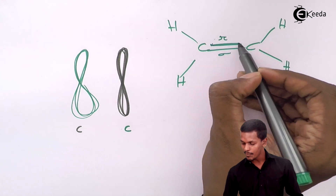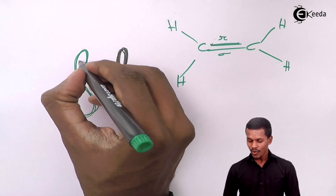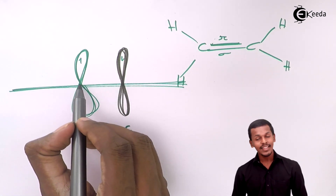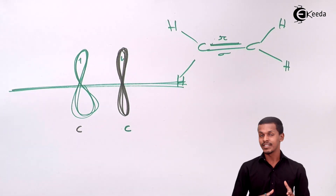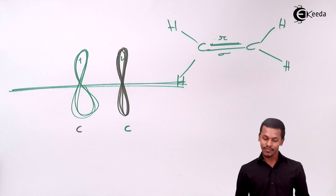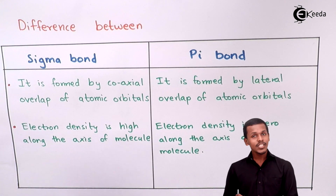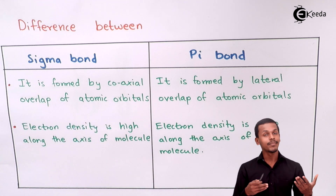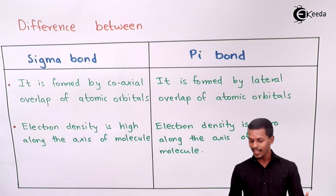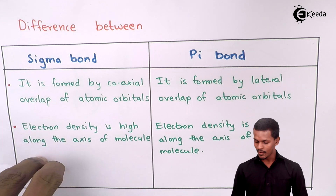Electrons of opposite spins are required. If I pass the axis through the pi bond, I cannot find electrons along it, because the lobes are present above and below the axis — the electron density on the axis itself is very low. That is why in the pi bond, the electron density on the axis is negligible. To revise: sigma bond is formed by coaxial overlapping with high electron density along the axis, while pi bond is formed by lateral overlapping with zero electron density along the axis.